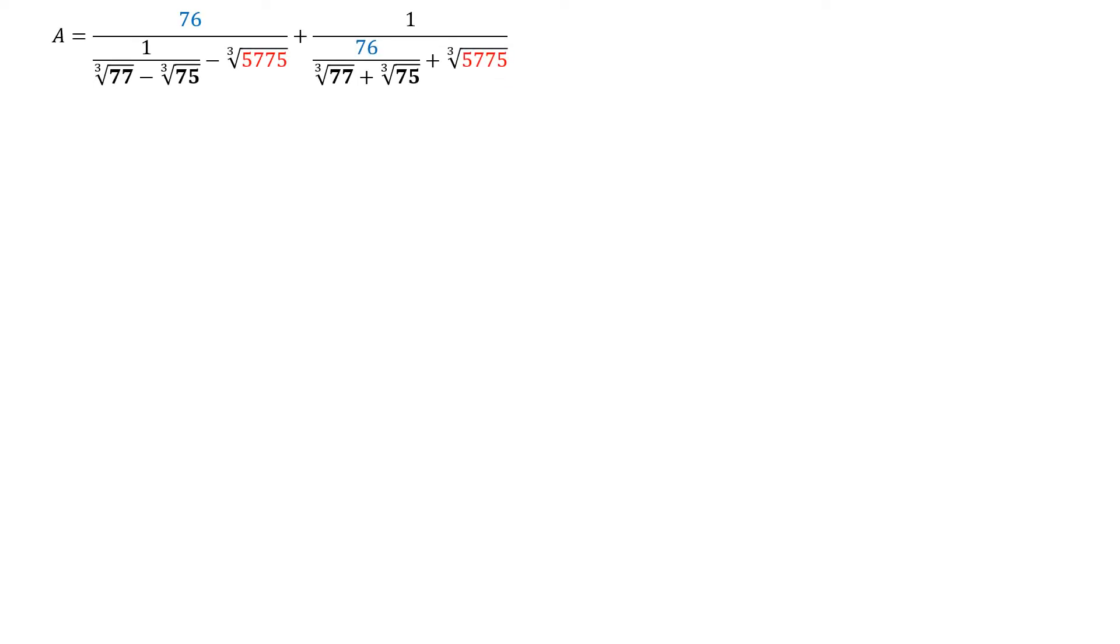Let's call this number A. We see that we have four numbers in A, which are cubic root of 77, cubic root of 75, cubic root of 5775, and the number 76. We're going to use the numbers in bold as reference because we want to express the numbers in blue and red in terms of those numbers. First, let's set X equals the cubic root of 75, and Y is the cubic root of 77.